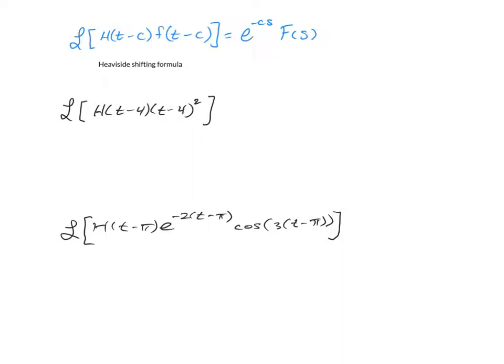For these problems we're going to use what's called the Heaviside shifting formula. To do this, you always have to make sure that both the h function and the f function are evaluated at t minus c. If these are ever different, you cannot use this formula. You have to do some kind of rewriting to make it use this formula.